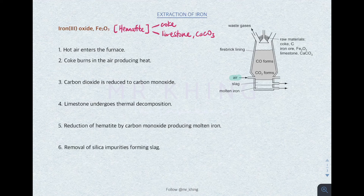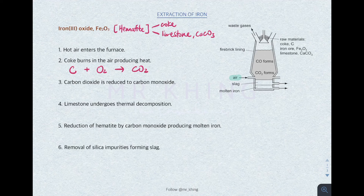Step two: coke burns in the air producing heat, with the chemical equation — coke burns in the presence of oxygen to form carbon dioxide. This is the reaction where heat is produced, forming carbon dioxide.